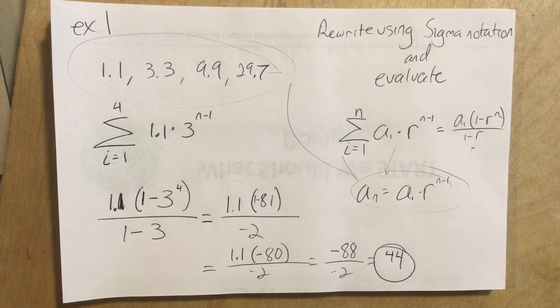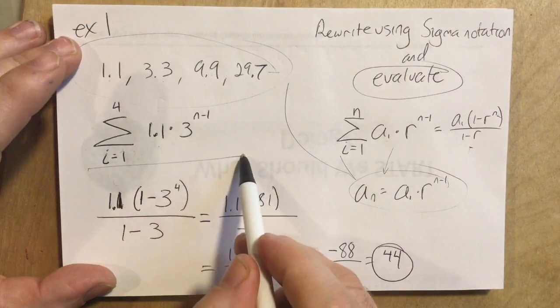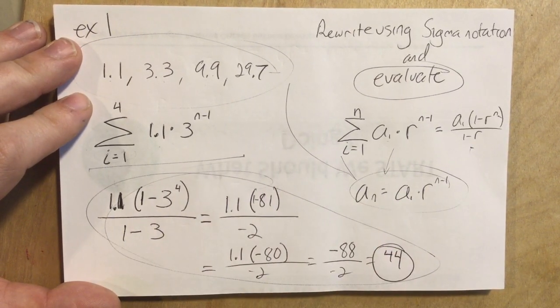And let's see. Yeah, and we evaluated it. That's the evaluate part. Up to here, we hadn't done any evaluating. This part is the evaluating part when we add it all up.